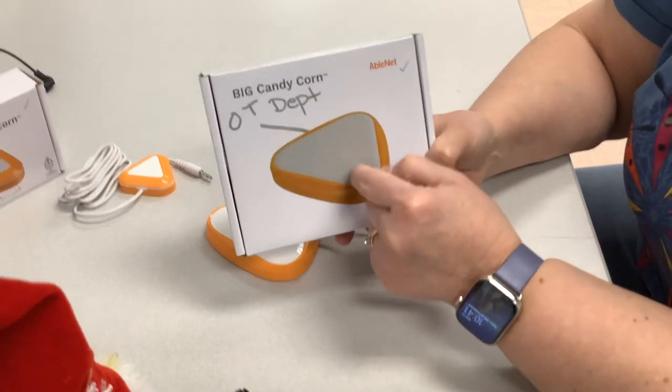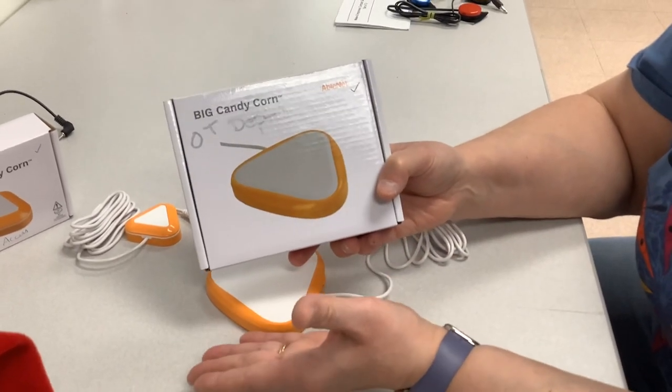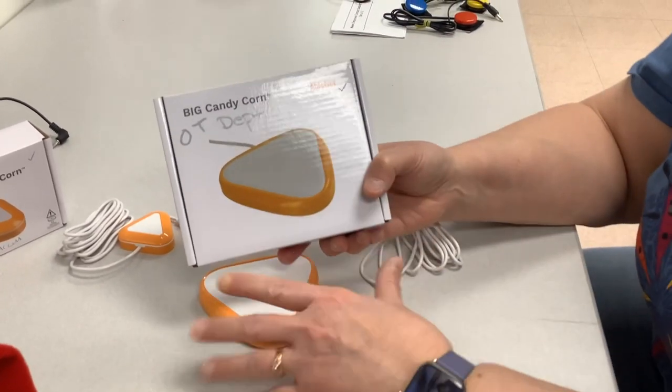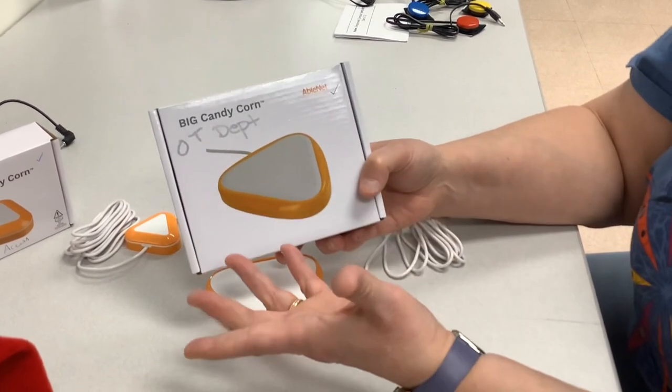This is the big candy corn switch, and this is a proximity switch. A proximity switch means you don't have to push anything, you just have to wave your hand over the switch and it will be activated.